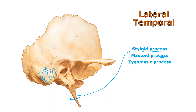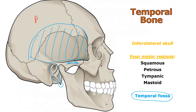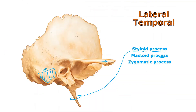The zygomatic process is another bony process sticking out, reaching toward the zygomatic bone — the cheekbone. The zygomatic bone is not shown here, but you can see the zygomatic process of the temporal bone reaching over toward the zygomatic bone, which is a facial bone we'll cover in another lecture.